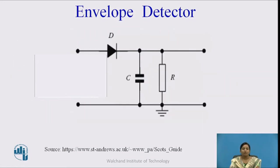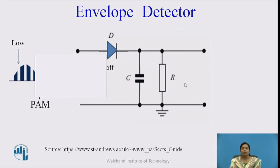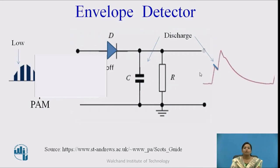When a low pulse is given to the diode, it works in reverse biasing mode — it acts as an open switch. At this point, the voltage across the capacitor is greater than the input voltage, so the capacitor starts discharging through the load resistance R. In this way, we get a charging and discharging voltage across the load resistance R. This charging-discharging output is the output of the envelope detector.